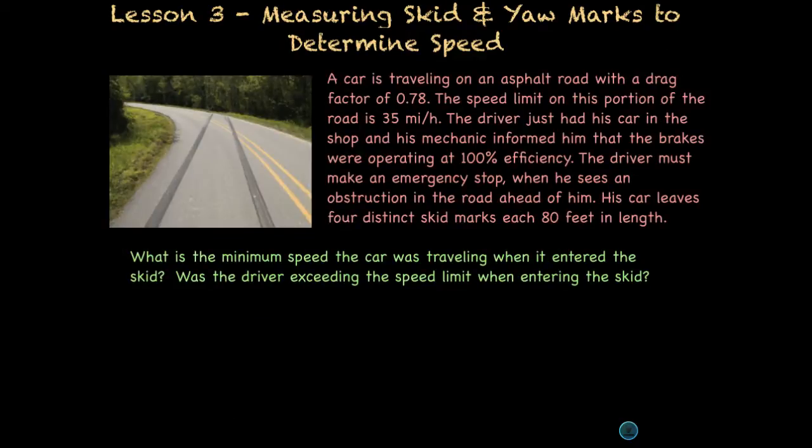Let's go ahead and look at an example using our skid marks. In this first example, a car is traveling on an asphalt road with a drag factor of 0.78, and the speed limit on the road is 35 miles per hour. The driver just had his car in the shop, and his mechanic informed him that the brakes were operating at 100% efficiency. The driver must make an emergency stop when he sees an obstruction in the road ahead. His car leaves four distinct skid marks, each 80 feet in length. Since the skid marks are all even in length, we'll go ahead and use the 80. We don't need to take an average. We want to answer this question, what is the minimum speed the car was traveling when it entered the skid, and was the driver exceeding the speed limit?